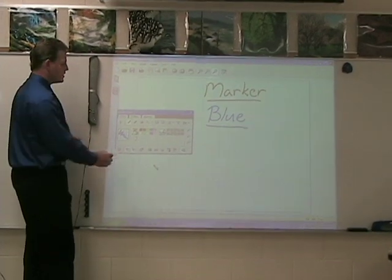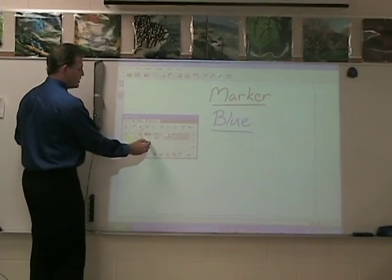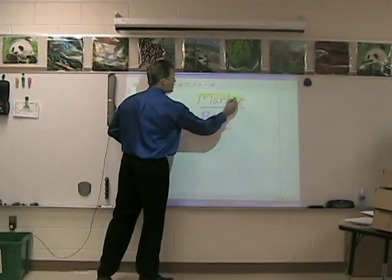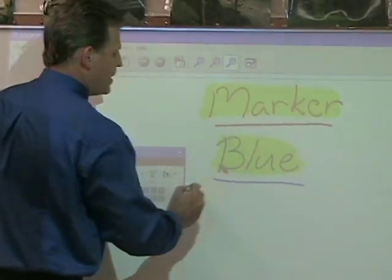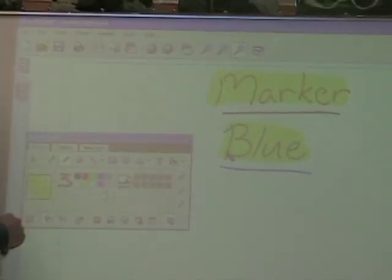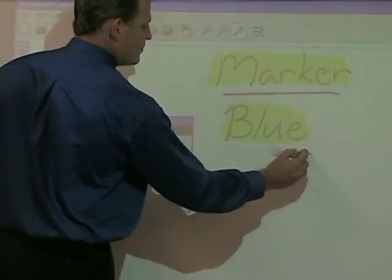In order to change tools, simply touch the tool that you want to use. For example, right here we're using the highlighter tool. We can now digitally highlight information anywhere on the board surface. Should we need to erase, it's also very easy to accomplish.